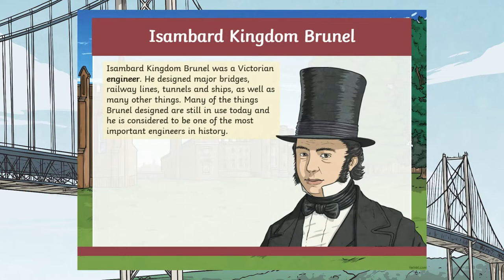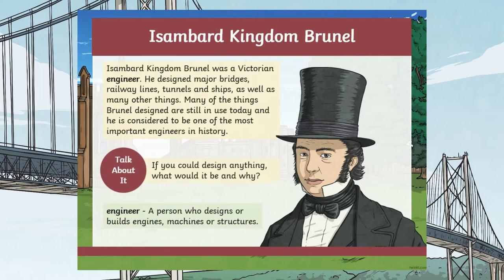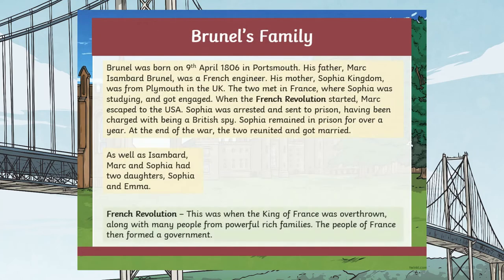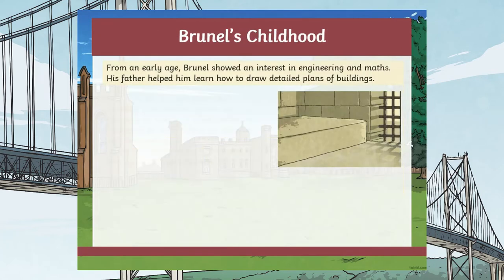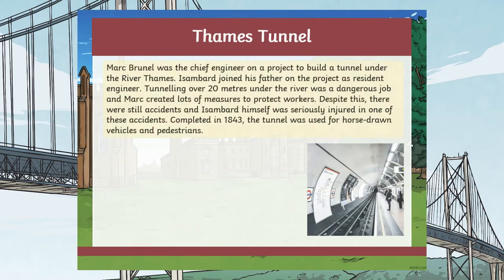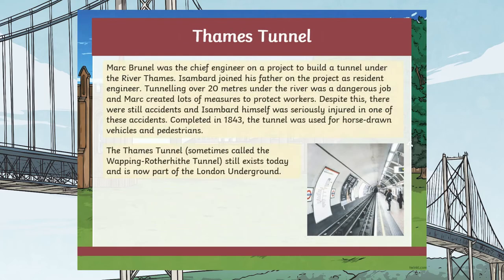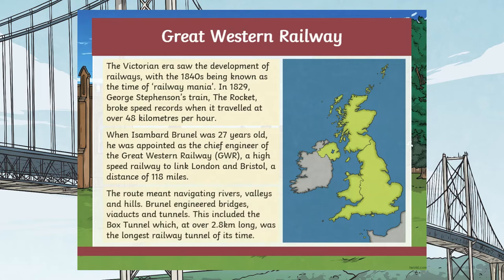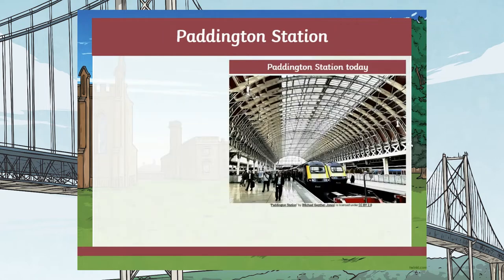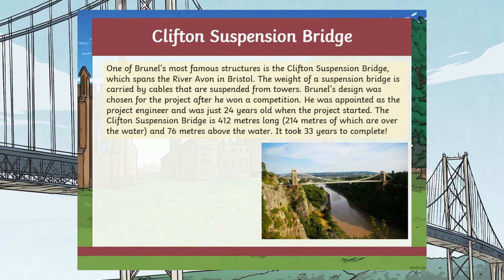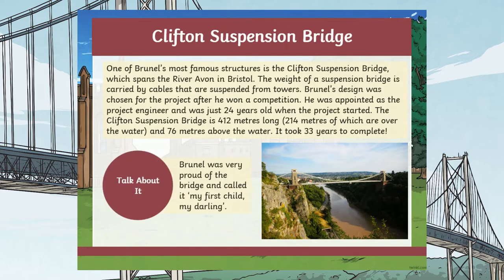Introduce this significant individual with our 'All About Isambard Kingdom Brunel' PowerPoint. This explains to learners that he was a Victorian engineer, as well as detailing some of his projects such as the Great Western Railway and the Clifton Suspension Bridge.